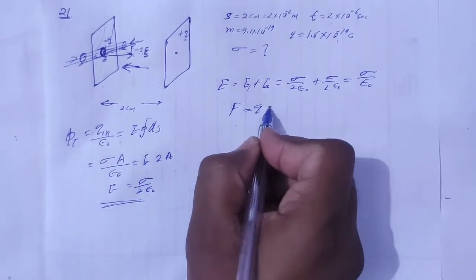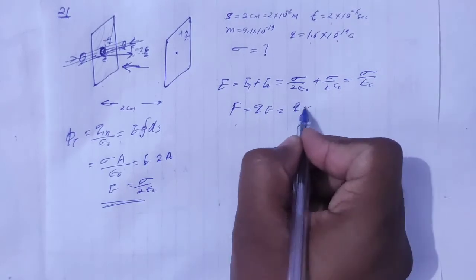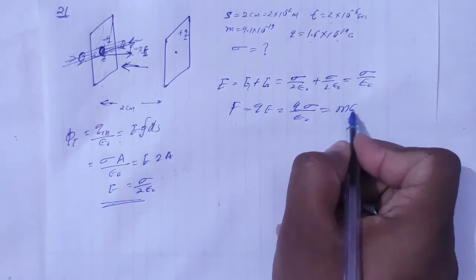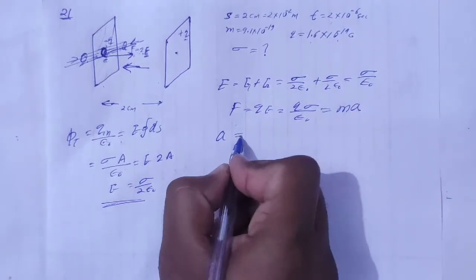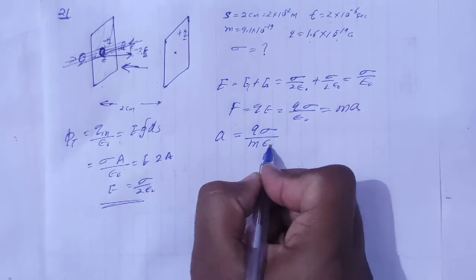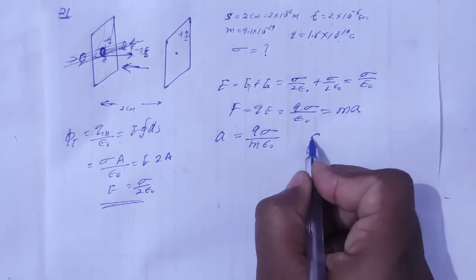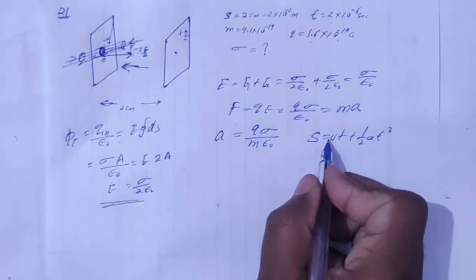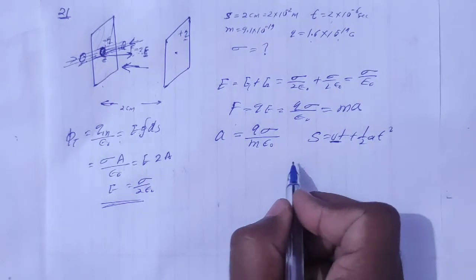Force apne paas f is equal to q e yani f is equal to q sigma upon epsilon naught. Ye apne paas force is he ko me m into a leek sa khaun yani meri paas acceleration a jayega kitna q epsilon sigma upon m epsilon naught. Ye acceleration a gaya. Newton bai saab ki second equation dhe ko s is equal to ut plus half at square. Electron red rest start wai ni u is equal to zero.